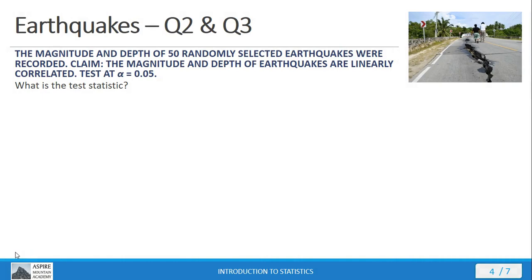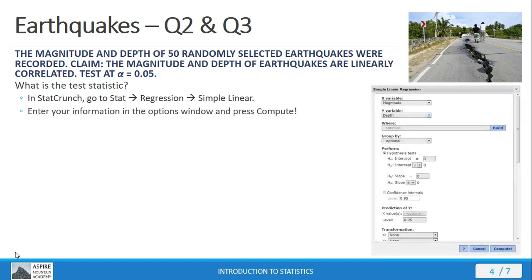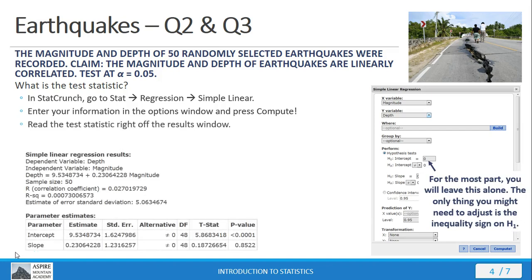What is the test statistic? Here we can go into StatCrunch. Once our data is there, we go to Stat, Regression, Simple Linear. Then we put our variables — the columns — with our data there for our X and Y variables, and everything else we pretty much leave the way it is. Hit Compute, and out comes our results. The test statistic is going to be in that parameter estimates table underneath the slope. There on the row for the slope, we get that test statistic 0.187. The p-value will be right next door to the test statistic — there again on that row for the slope: 0.8522.